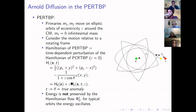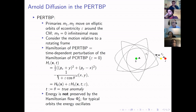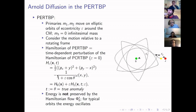When epsilon equals zero, we get the planar circular restricted three-body problem, where the Sun and Jupiter are assumed to move on circles about the center of mass. That problem is given by a time-independent Hamiltonian and total energy is preserved. In the elliptic restricted three-body problem we have a time-dependent total energy, so in principle conservation of energy does not hold, and energy will experience changes of order epsilon over short periods of time.